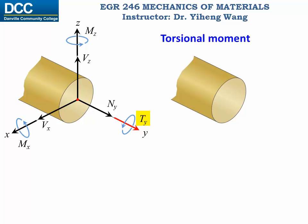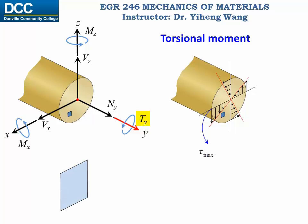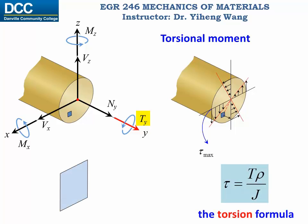For the torsional moment, the shear stress follows a linear distribution changing radially from zero at the center to the maximum at the edge. For an arbitrary location, its shear stress is calculated by the torsional moment and rho, being its radial distance from the center. This shear stress can be resolved into components along the centroidal axis.